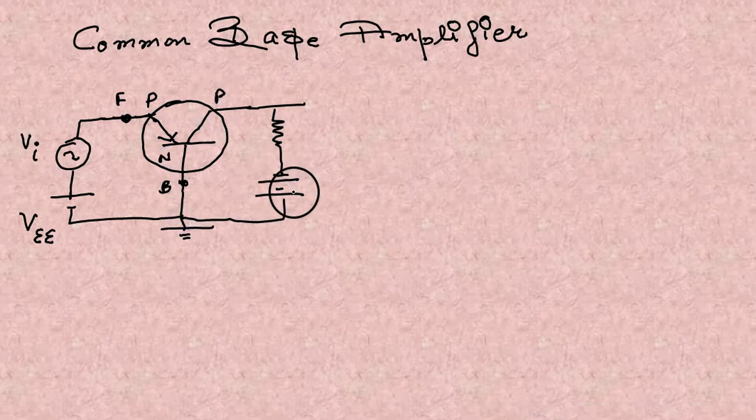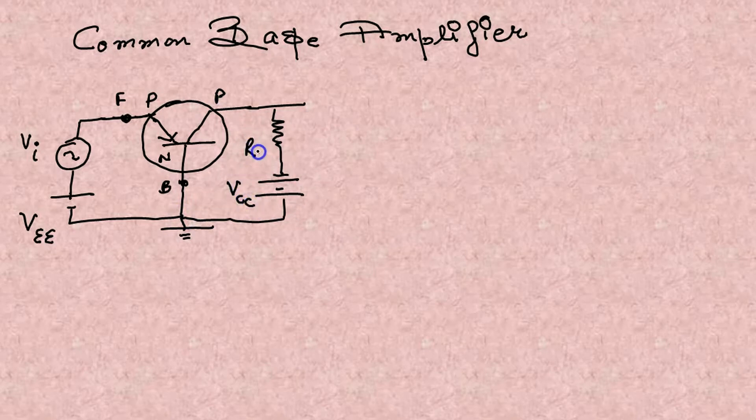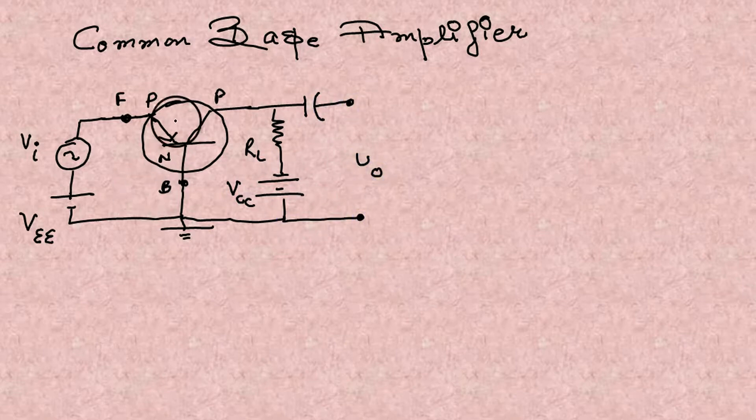So reverse biasing to collector, the battery is named as VCC and it is RL. The output signal is taken through the capacitor because AC can get out through it.